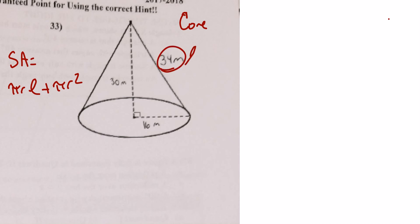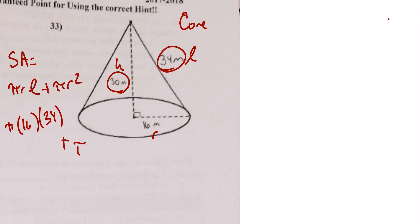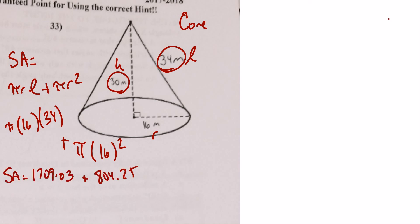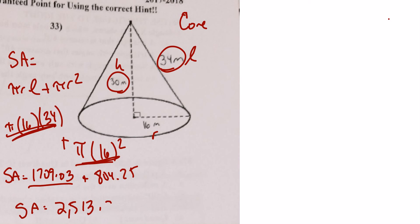Surface area = π(r)(L) + πr². Radius = 16, slant length L = 34. First part: π(16)(34) ≈ 1,709.03. Second part: π(16²) ≈ 804.25. Total surface area = 1,709.03 + 804.25 = 2,513.28 square meters.